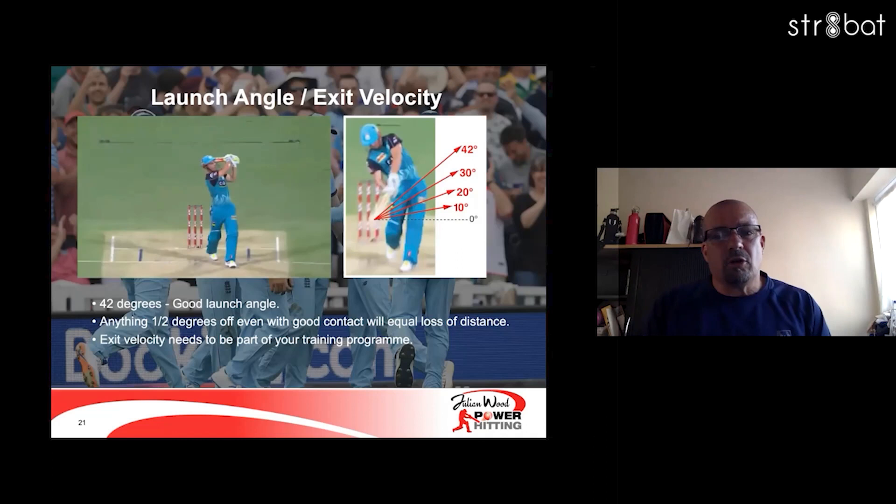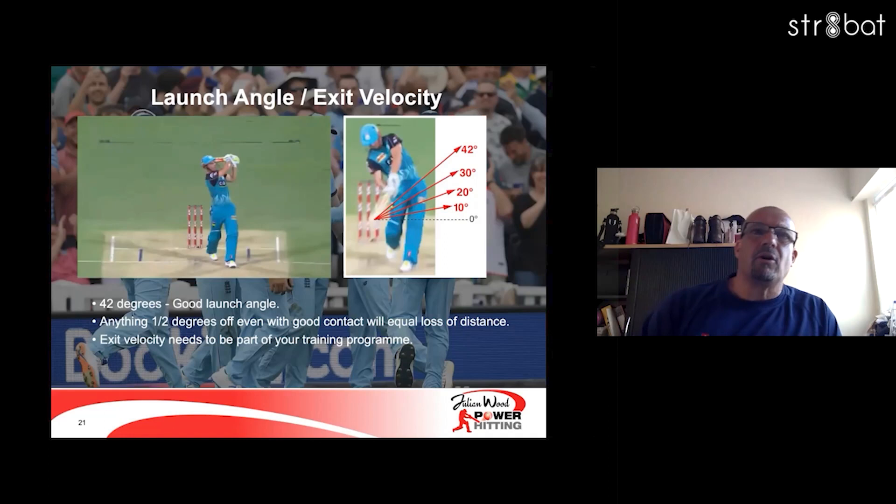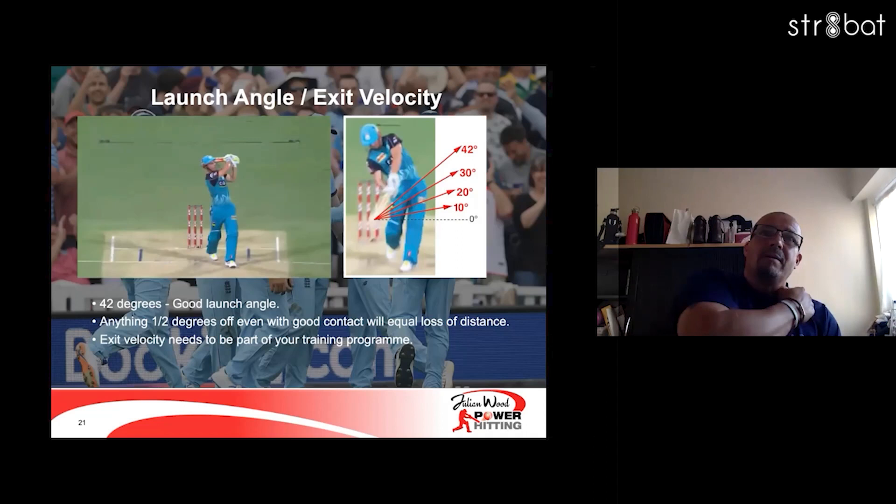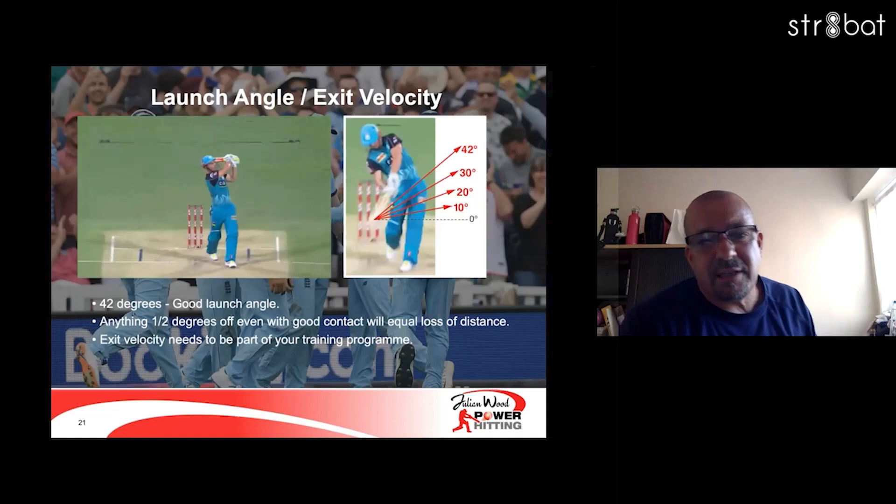Launch angle and exit velocity — it's a serious shot as well. 42 degrees is a good launch angle, but anything one to two degrees off, even with good contact, will equal loss of distance. That's why I put up targets at 42 degrees — they're looking to hit those, which just gives them a target as well.